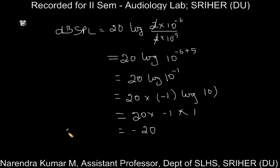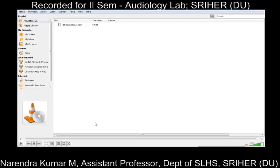To summarize: if the observed value is greater than the reference value, we get a positive dB value. If the observed value equals the reference value, we get 0 dB. If the observed value is less than the reference value, we get a negative dB value.